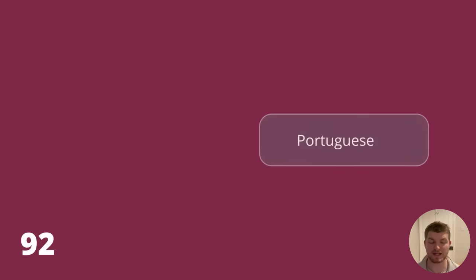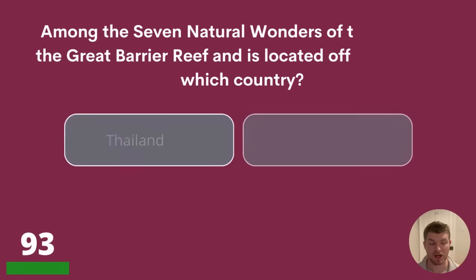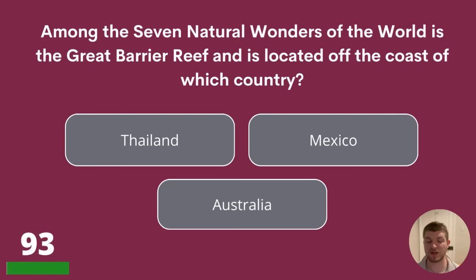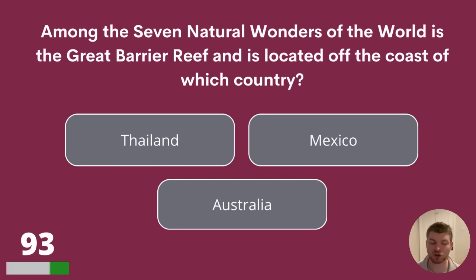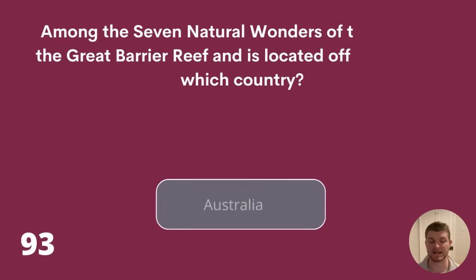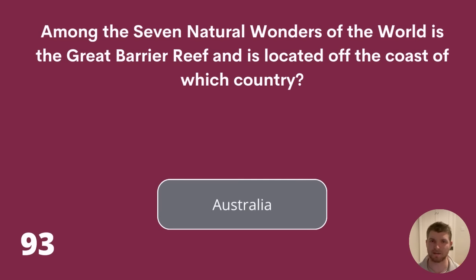Question 93. Among the seven natural wonders of the world is the Great Barrier Reef, and it is located off the coast of which country? Thailand, Mexico, or Australia? The answer is Australia.